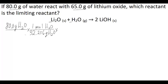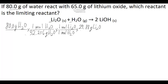Because the ratio is one to one, for every one mole of water that reacts, one mole of lithium oxide is also going to react. Then you want to get to grams of lithium oxide so you can compare how many grams of lithium oxide could react with 80 grams of water to the actual grams of lithium oxide you have. You calculate the molar mass of lithium oxide to be 29.88 grams of lithium oxide per one mole of lithium oxide.